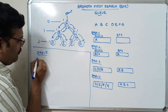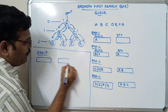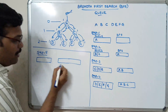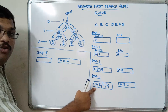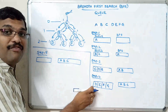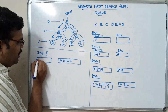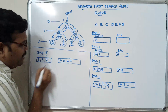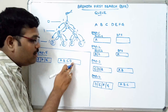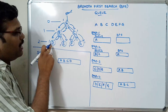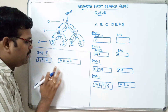Step five: A, B, C are already in BFS. Remove the next element from the front end — D is deleted and placed in BFS. There are now three elements remaining in the queue: E, F, and G. Since D is a leaf node with no adjacent nodes, just ignore and move on.